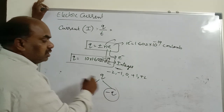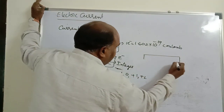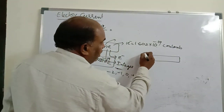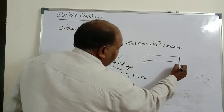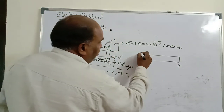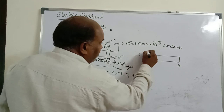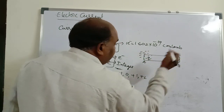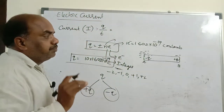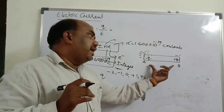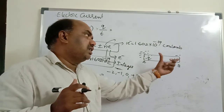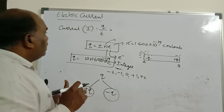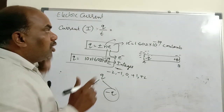Charges are two types: positive charge and negative charge. Consider a conductor — a conductor allows current to pass freely. Every conductor has two terminals, A and B. The terminal where more number of electrons are present is called negative charge. Where fewer electrons are present is called positive charge.